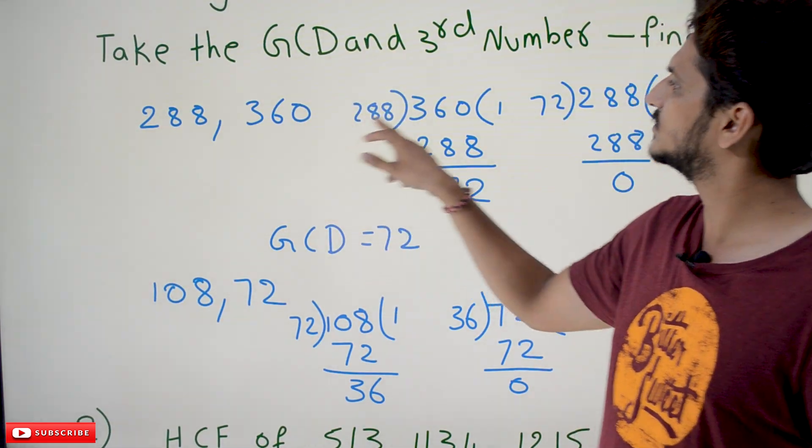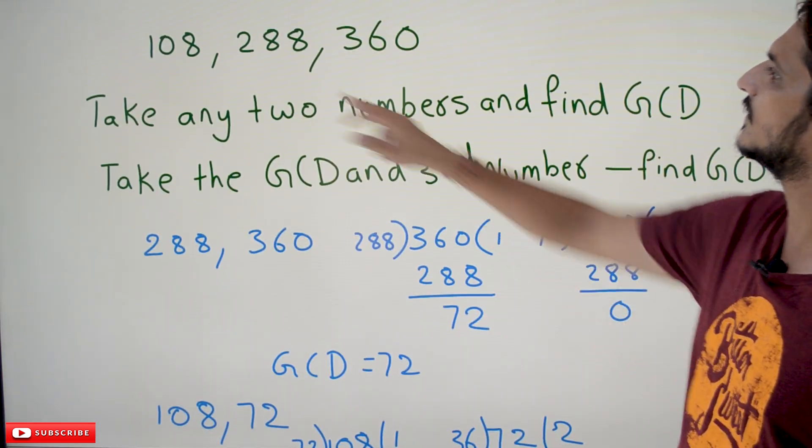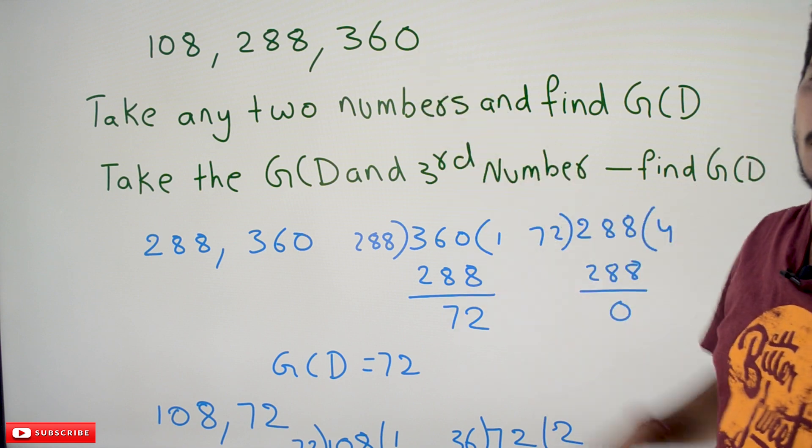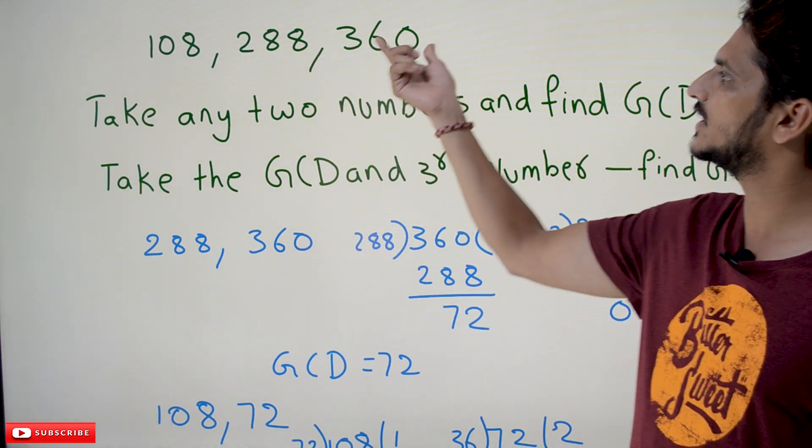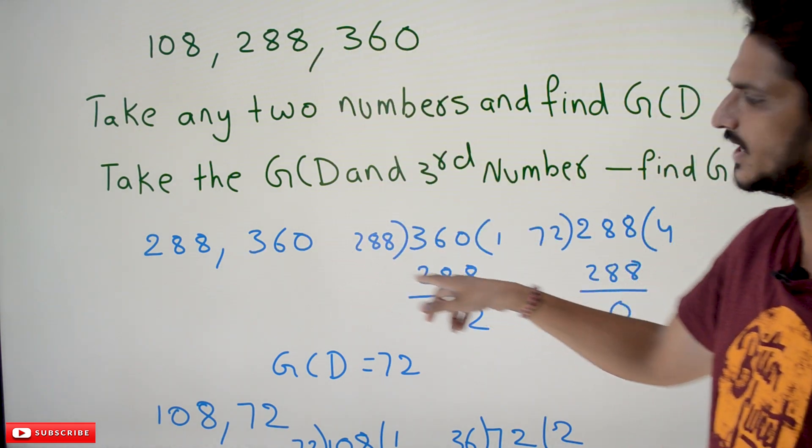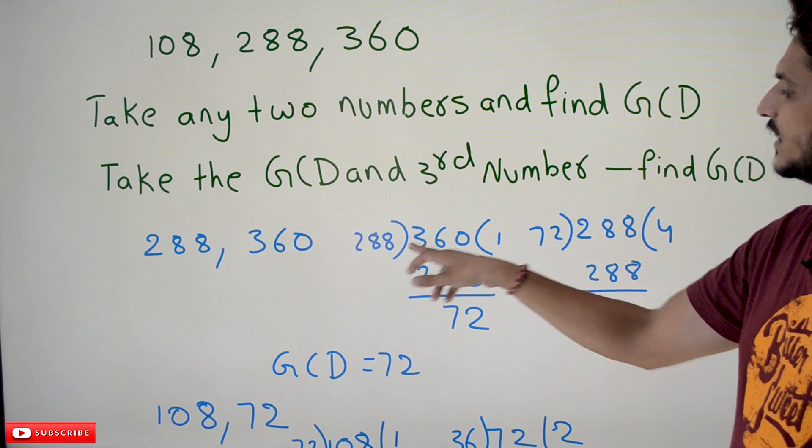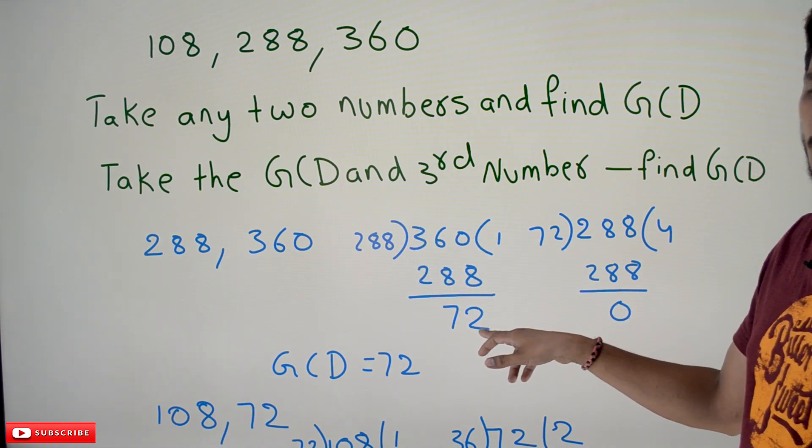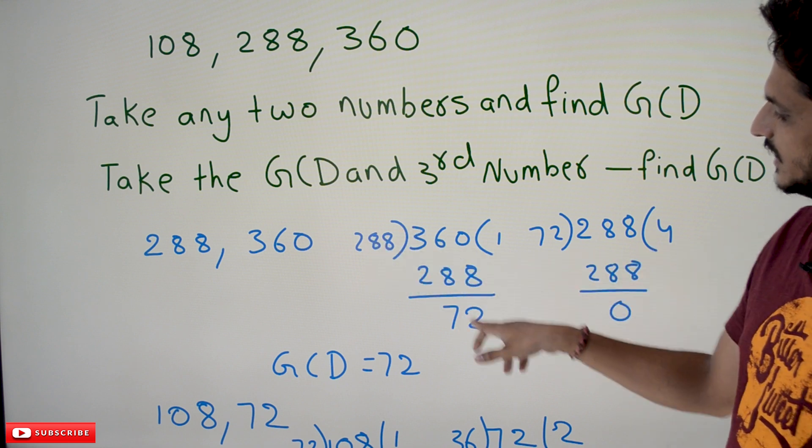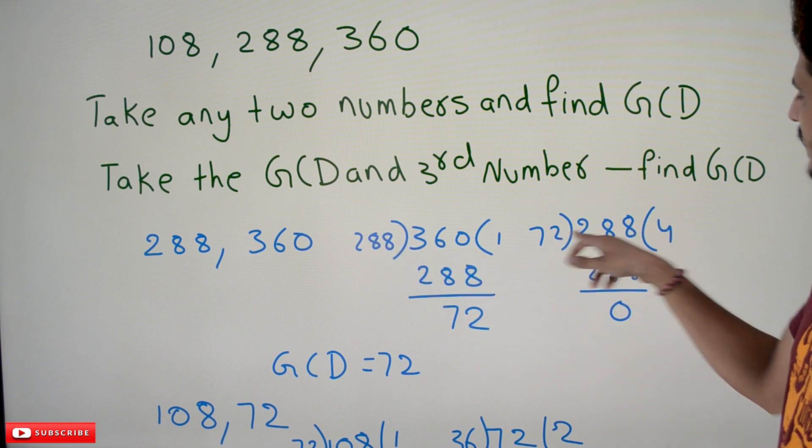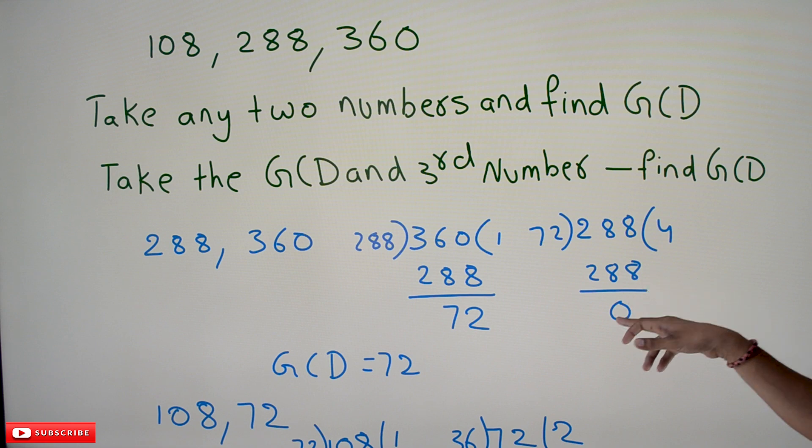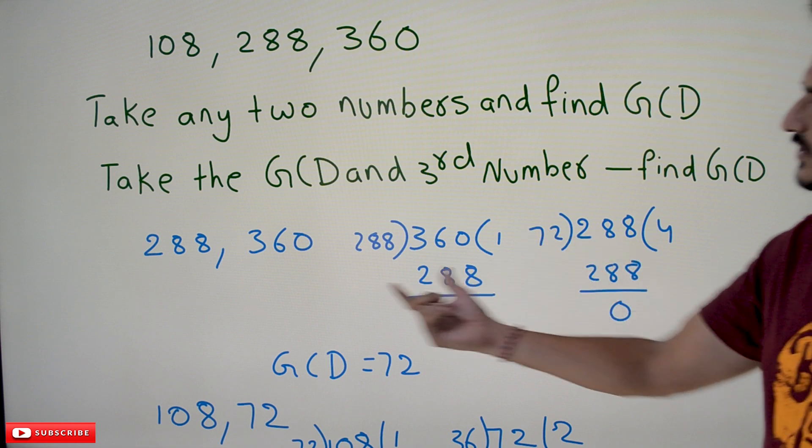We're taking 288 and 360. If you find the GCD using the division method: 360 divided by 288, 1 times 288, remainder 72. Again, 288 divided by 72, 4 times 288, remainder 0. So the GCD of these two numbers is 72.